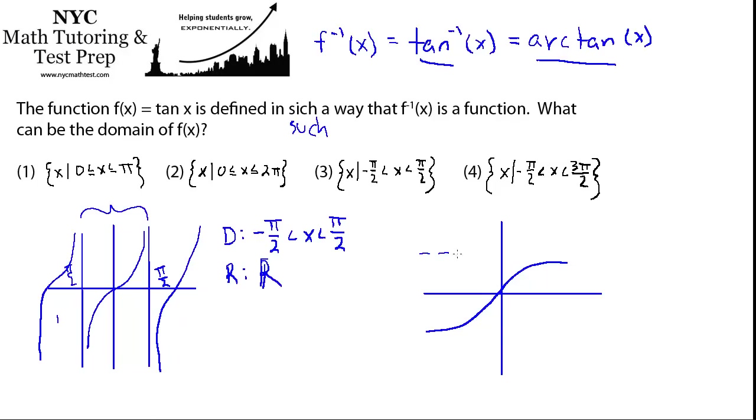And that means that it must be in this range. How do we limit it to that range? Well, we make sure that the domain of the original function was limited to only go from here to here. And we did that. It was negative π/2 less than x, less than π/2. And that matches up with choice 3.